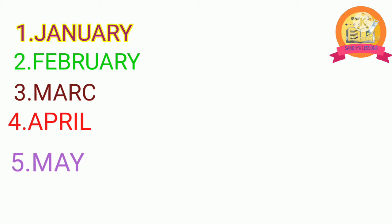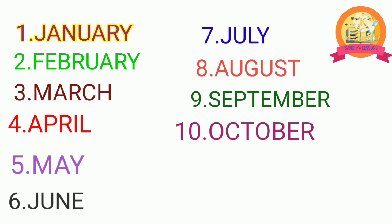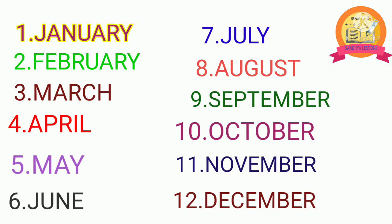Children, have you all understood about months of the year? Yes, ma'am. Very good. Children, can you say all the 12 months of the year? Yes, ma'am. January, February, March, April, May, June, July, August, September, October, November, December. Very good, children. Thanks for watching.